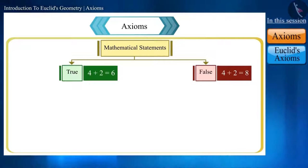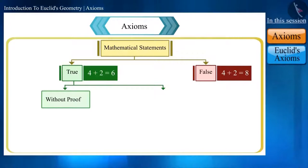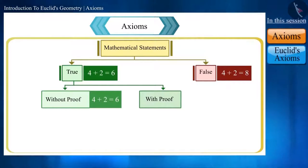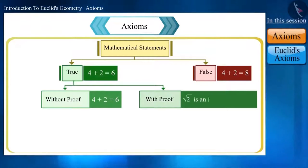There are also two classes of true statements. First, that is assumed to be true without proving, that is universal truths, such as we saw 4 plus 2 equals 6. And the second, which is proved by evidence. For example, square root of 2 is an irrational number.